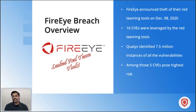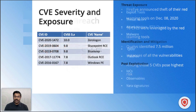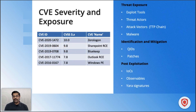We decided to provide comprehensive threat exposure, best practices, and post-exploitation scenarios for these CVEs. The five CVEs discussed today are CVE-2020-1472, CVE-2019-0604, CVE-2019-0708, CVE-2017-11774, and CVE-2016-0167. All belong to the Microsoft ecosystem and we will examine them from a threat exposure perspective, identification and mitigation perspective, and post-exploitation perspective.